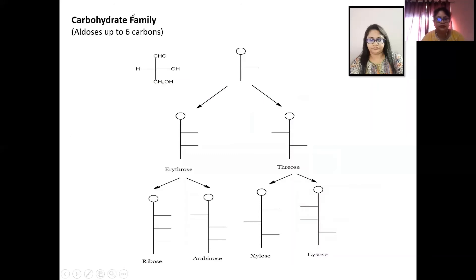Now see this carbohydrate family. If we start with glyceraldehyde, we are writing glyceraldehyde in this way: this is the head CHO and this is OH. Now we are increasing one carbon just above it. We are adding one chiral carbon. So this will look like this, and if the OH group is on the right hand side